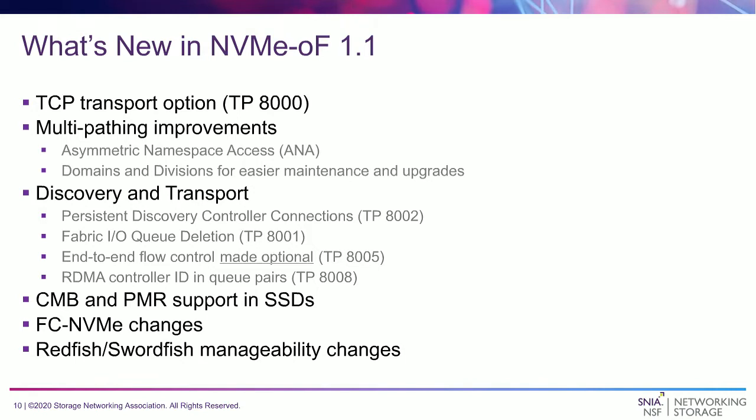So, what's new? We have a combination of things new in NVMe 1.4, which also applies to Fabrics, and things specifically new in NVMe over Fabrics 1.1. In 1.1 we have the TCP transport option, some multi-pathing improvements, changes in discovery and transport, and new capabilities for CMB — controller memory buffer — and PMR — persistent memory regions — in SSDs that can be used with NVMe over Fabrics. Ilker will talk more about that. There are also additional changes in FC NVMe that David will cover, and emerging capabilities for manageability using Redfish, Swordfish, and Phil will cover that.